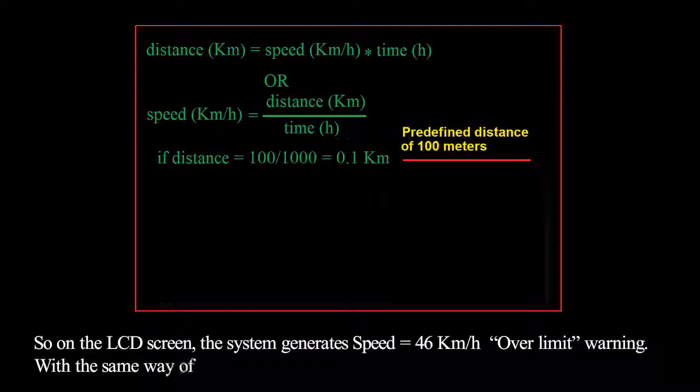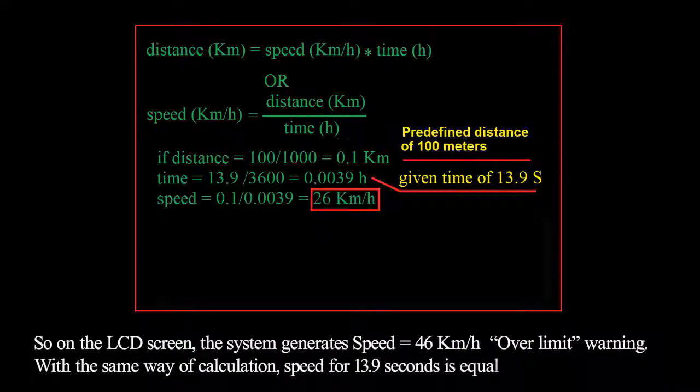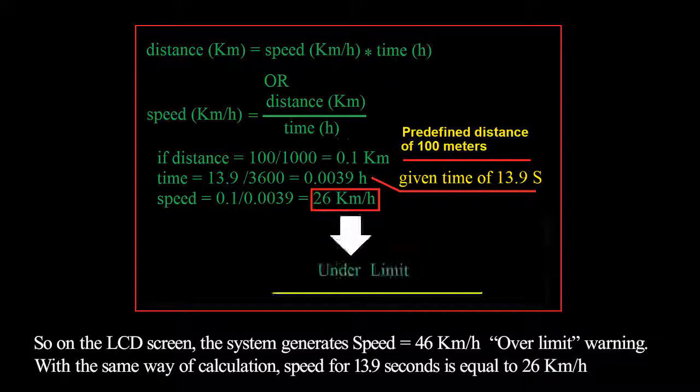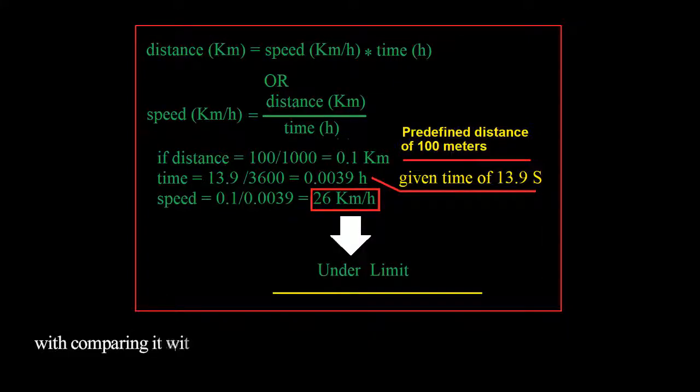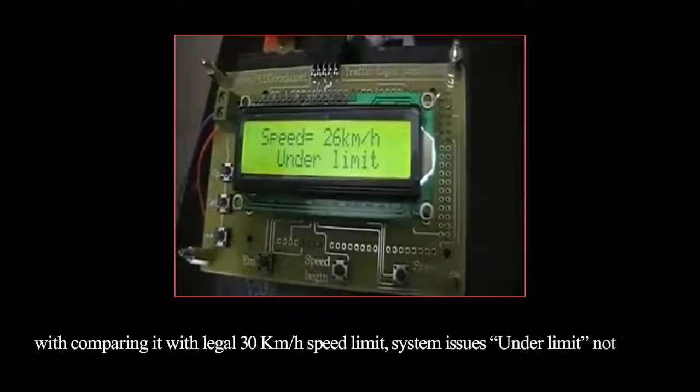With the same way of calculation, speed for 13.9 seconds equals 26 kilometers per hour. Comparing it with the legal 30 kilometers per hour speed limit, the system issues 'under limit' note this time.